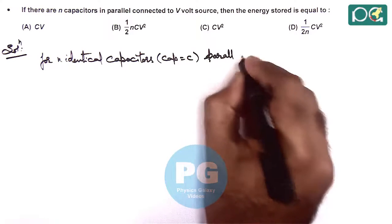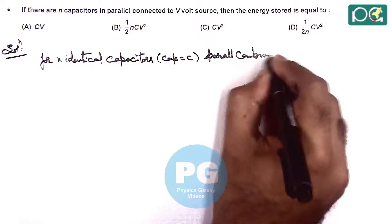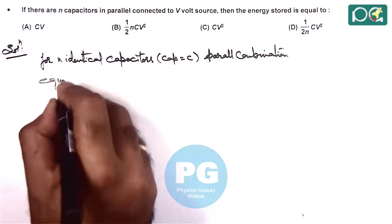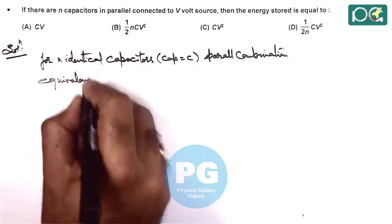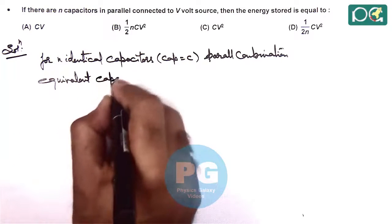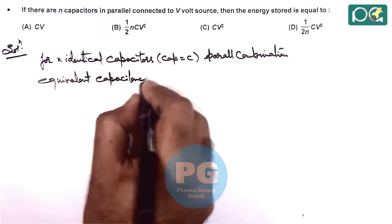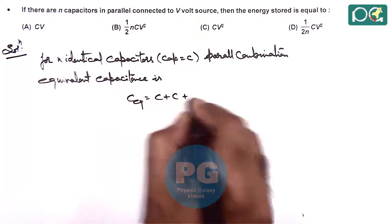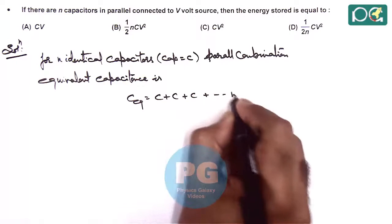For parallel combination, the equivalent capacitance is C equivalent equals C plus C plus C up to N times.